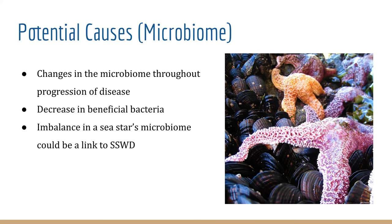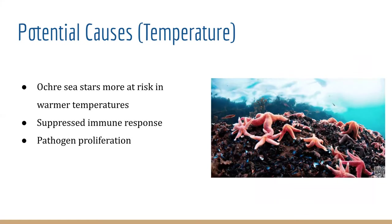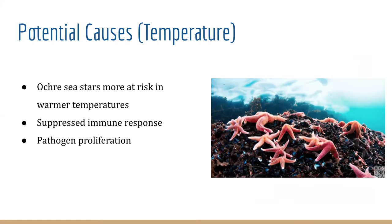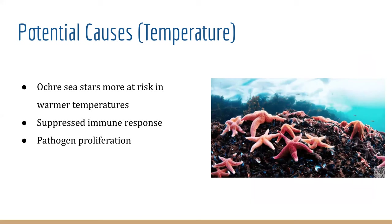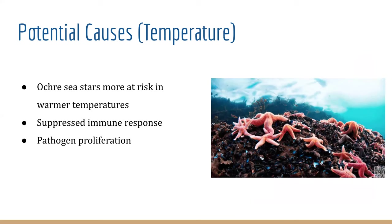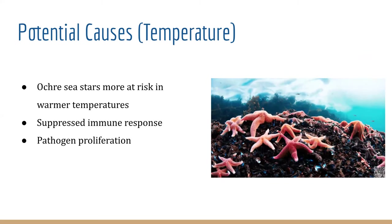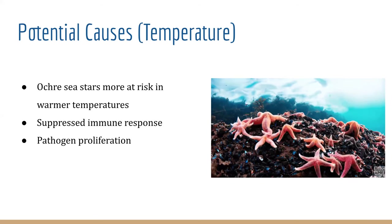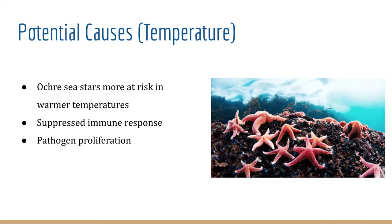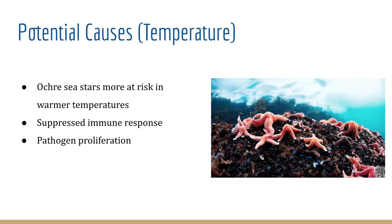Researchers in this study think that the changes in a Seastar's microbiome and the imbalance could lead to Seastar wasting disease, or it is a consequence of infection from another pathogen. Another possible cause for Seastar wasting is the effects of temperature. For an ochre seastar, at higher temperatures they're at higher risk for infection. Warmer temperatures can also suppress a species' immune response, making them more susceptible.